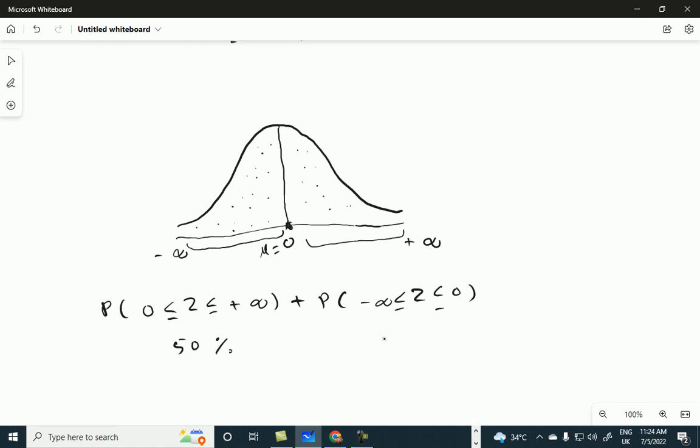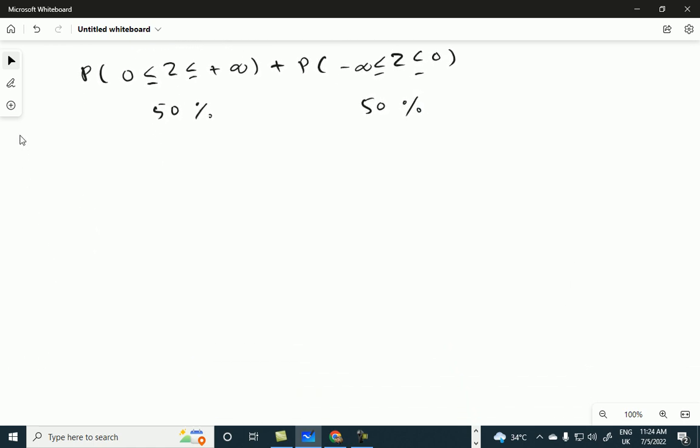Zero is greater than minus infinity. This area is 50%, and this area is also equal to 50%. By 50% we mean 50 over 100, or 50 out of 100, or this is equal to 0.5. So 0.5 plus 0.5, if you add this up, this is equal to 1, or this is equal to 100%.